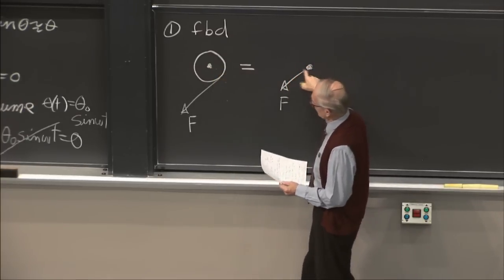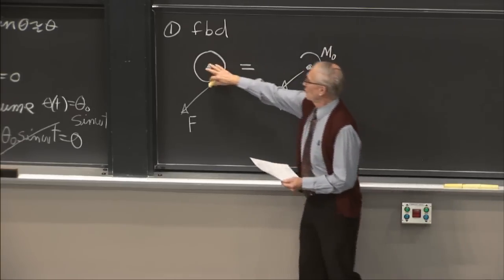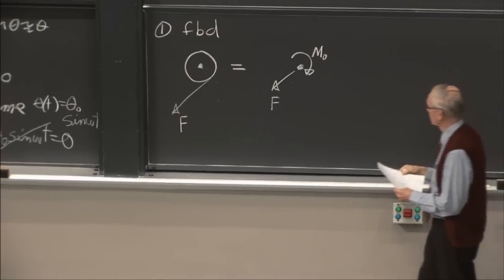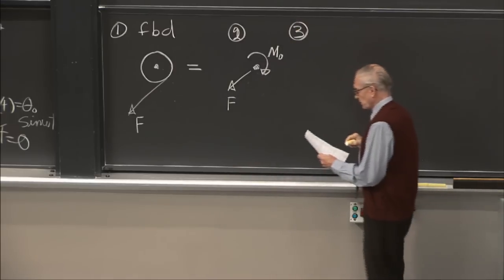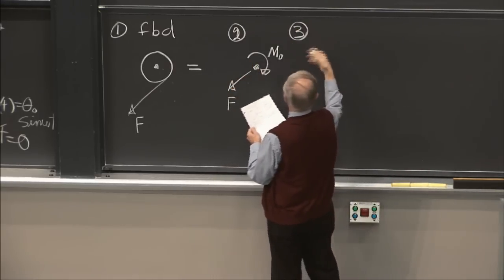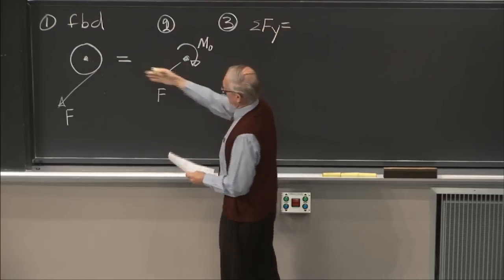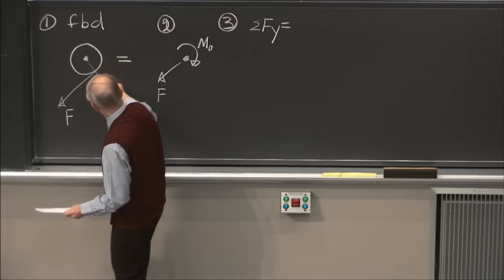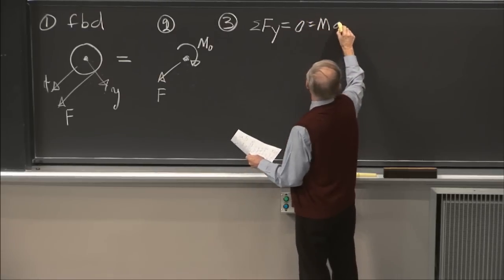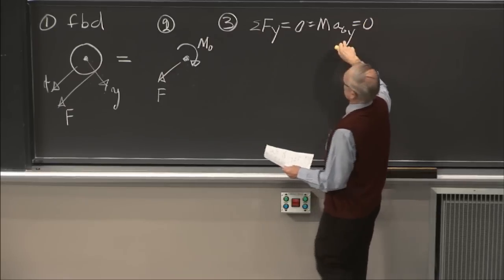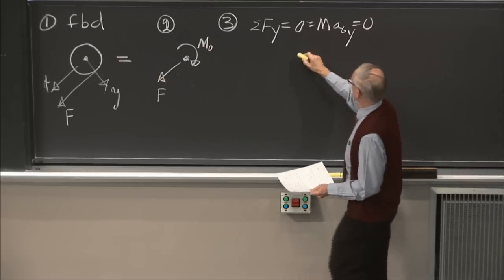Applying the laws of motion: sum of forces in y equals M * a_Gy. Since F is in the x direction, there are no forces in y, so y_double_dot = 0. That's the first equation of motion. The second: sum of forces in x = F (in the i-hat direction) = M * x_double_dot. So x_double_dot = F/M = 150/75 = 2 m/s².